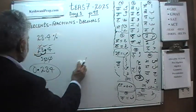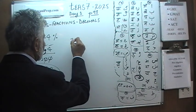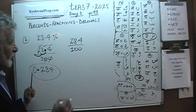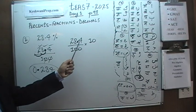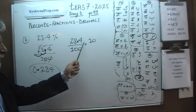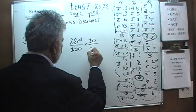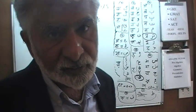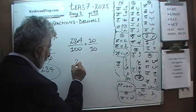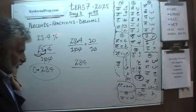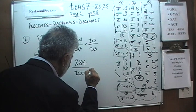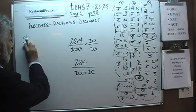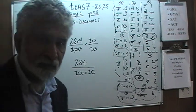Now the fraction form: it is simply 28.4 divided by 100. Our first job is to get rid of the decimal in the numerator. We do that by multiplying by 10, which moves the decimal one place to the right. Since we multiply the top by 10 we must multiply the bottom by 10 as well — and 10 divided by 10 is 1, so we haven't changed the value. We end up with 284 over 100 times 10, which I'll write as 284 over 1000. Now we need to reduce it.